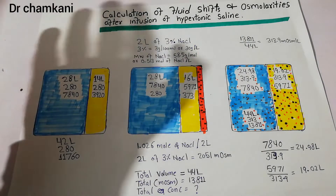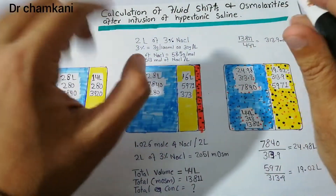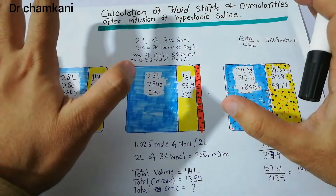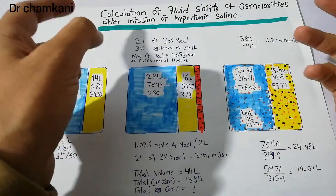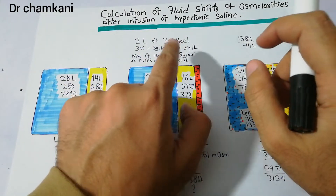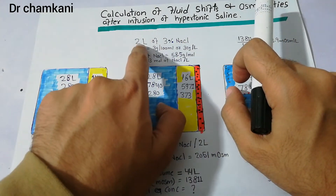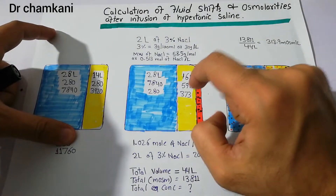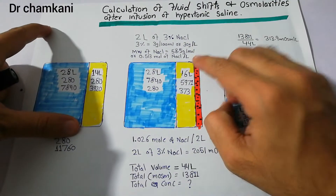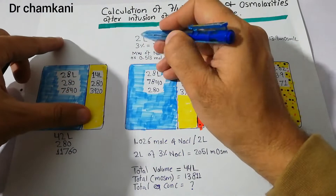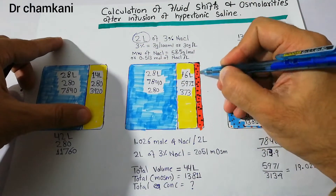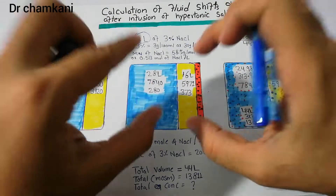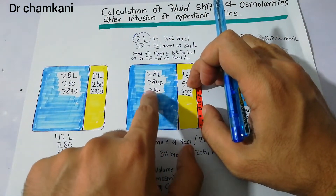Now we infuse hypertonic saline into this patient with normal kidney and heart physiology. Any solution with osmolarity more than 0.9% is hypertonic saline; here it is 3% NaCl, volume 2 liters. When infused, this fluid initially enters the extracellular compartment — the orange color represents the fluid and the black dots represent sodium and chloride. It does not enter the intracellular compartment initially.